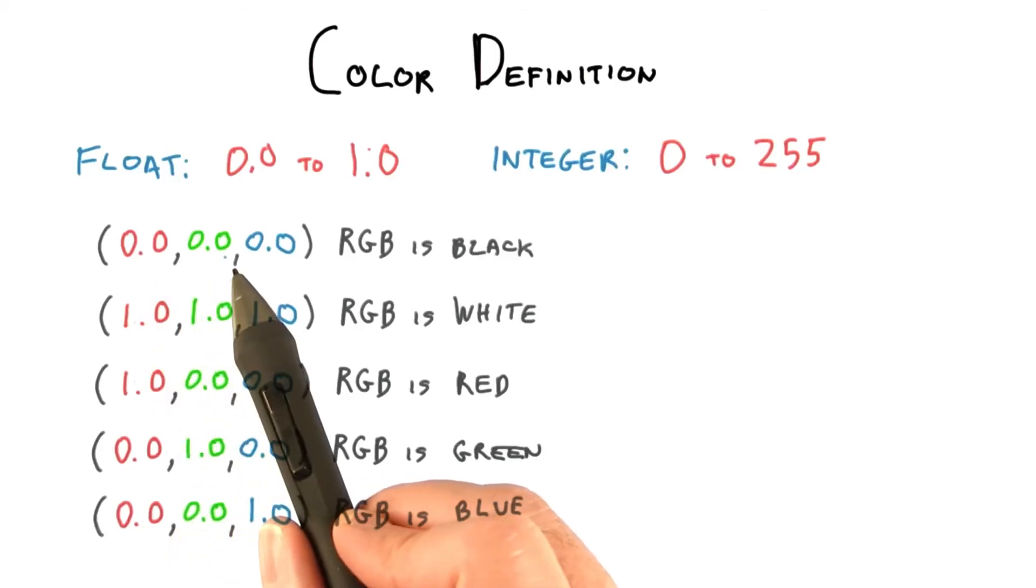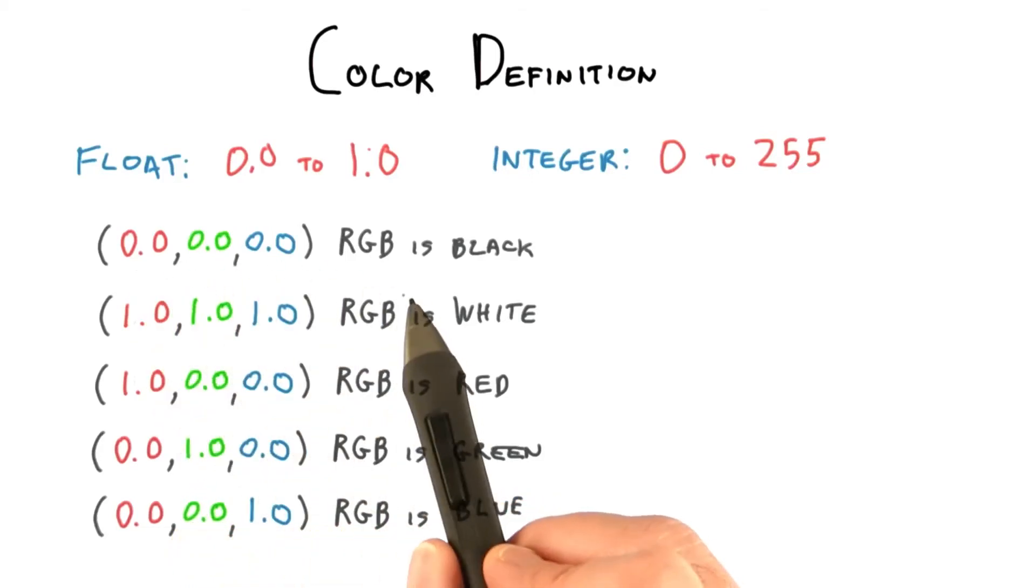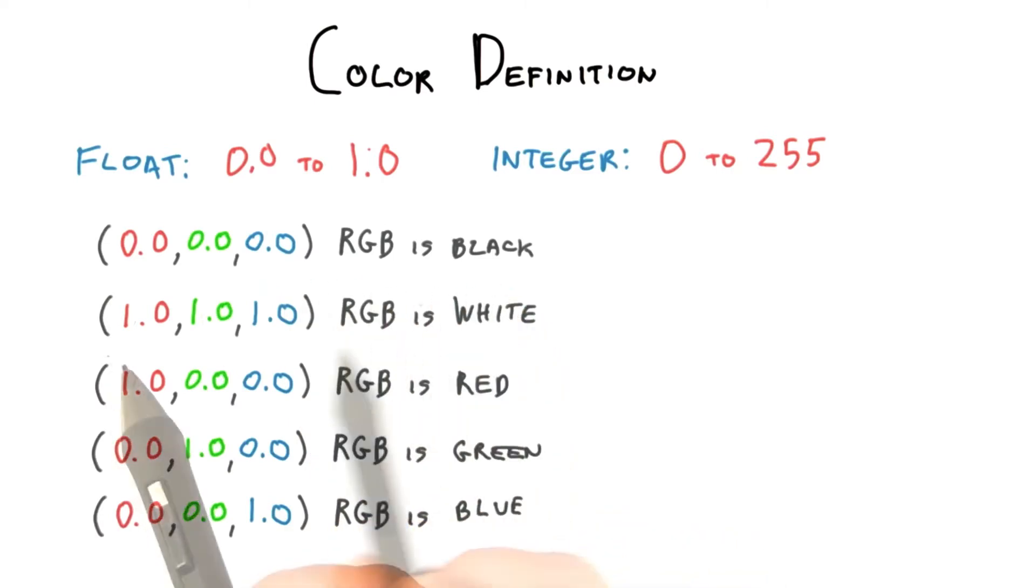For floating point, each color channel is defined as values from 0 to 1. 0, 0, 0 is black. 1, 1, 1 is white.